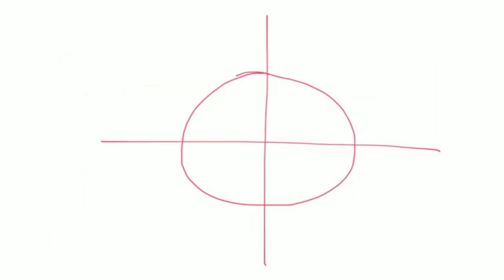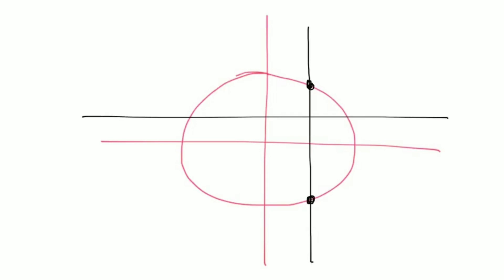If both a vertical line crosses the graph multiple times and a horizontal line also crosses multiple times, then this is clearly a case of a many-to-many relationship.